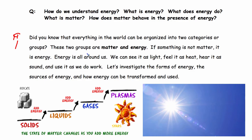Did you know that everything in the world can be categorized into two categories? These two groups or categories would be matter and energy. If something is not matter, it is energy. Energy is all around us. We can see it as light, feel it as heat, hear it as sound, and use it as we work. Let's investigate the forms of energy, the sources of energy, and how energy can be transformed.